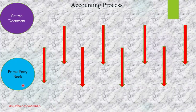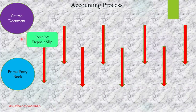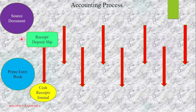According to your syllabus, you have to learn eight prime entry books, and with those eight prime entry books, there are eight documents you have to remember. The first basic document is the receipt or the deposit slip. By taking that information, we are making the cash receipt journal.